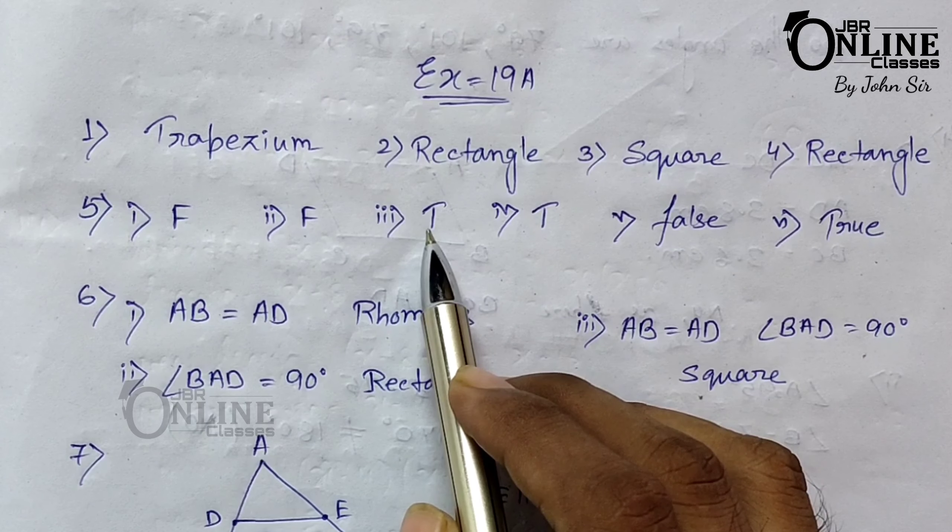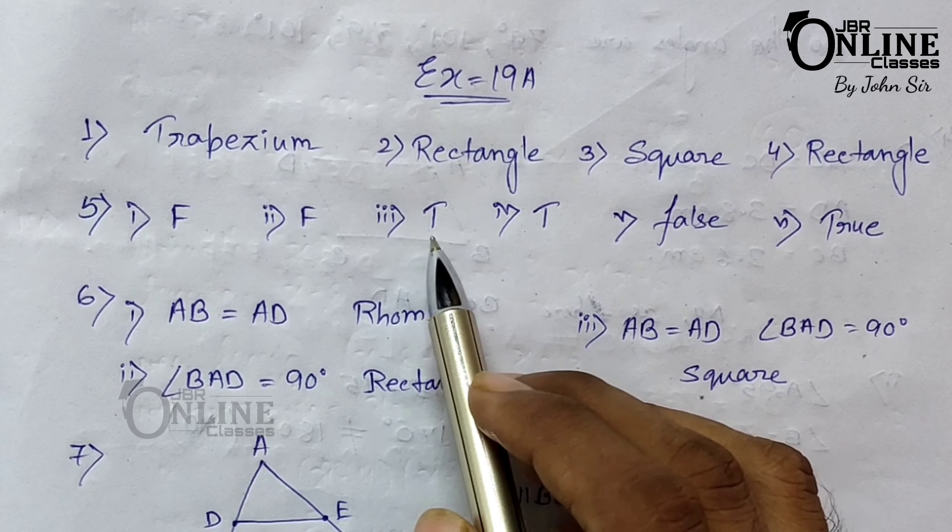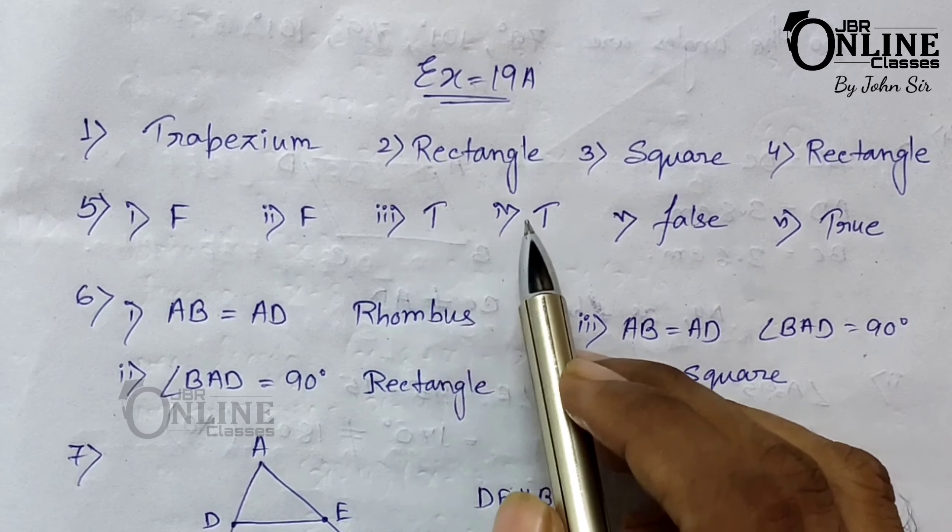Every square is a rhombus — true, because in a rhombus all four sides are equal, and in a square they are also equal. Every square is a rectangle — also true, because in both shapes opposite sides are equal and every angle equals 90 degrees. No parallelogram is a square — false. Every square is a parallelogram — true, because in a square opposite sides are parallel and equal.